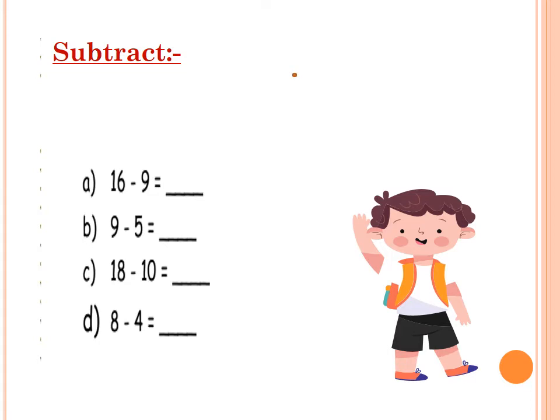Now with the subtraction — the minus sign. We have the first one: 16 minus 9. When we see the minus sign, count after the small number to reach the big number — after baby to reach mama. After 9, make your hand like 0 and count: 10, 11, 12, 13, 14, 15, 16. Stop at 16. How many fingers to reach 16? 7. So, the answer is 7.